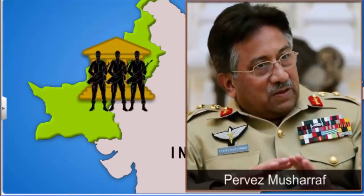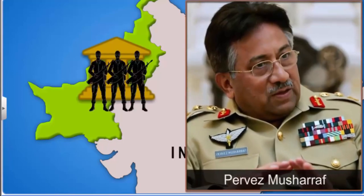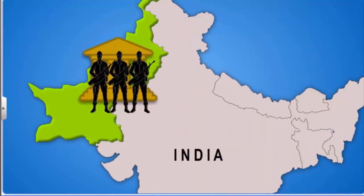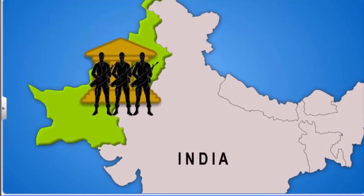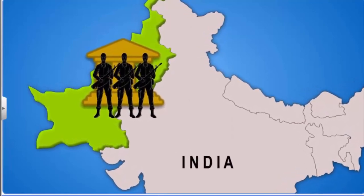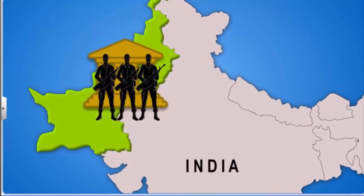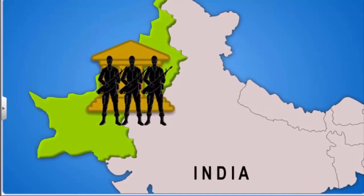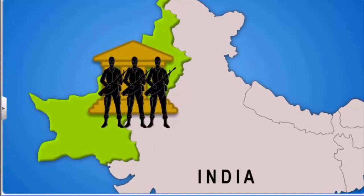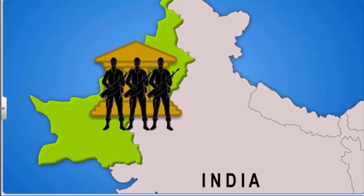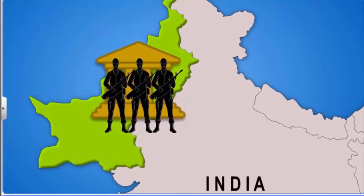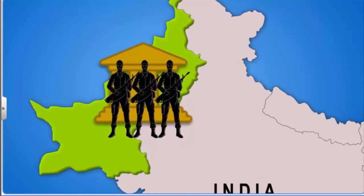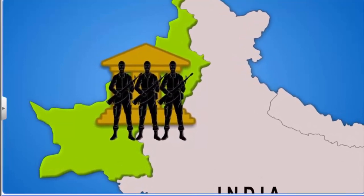A coup is the sudden, unconstitutional deposition of a legitimate government. A coup is usually led by a small group of the existing state establishment, typically the military, to replace the deposed government with another, either civil or military.